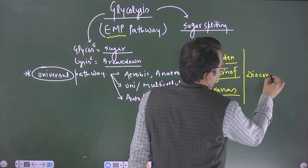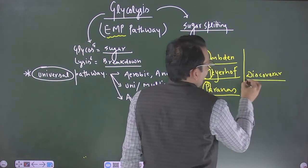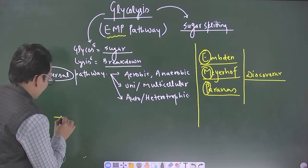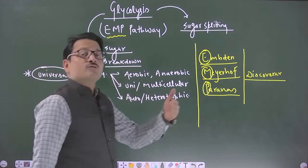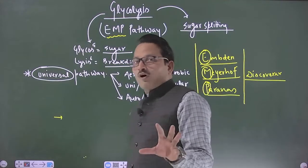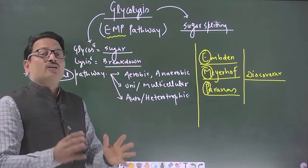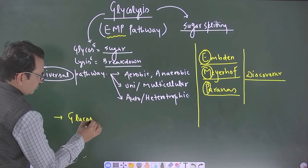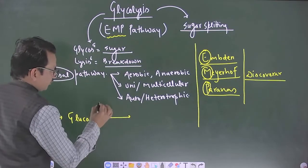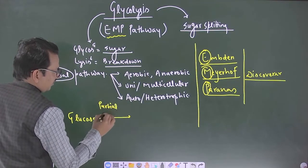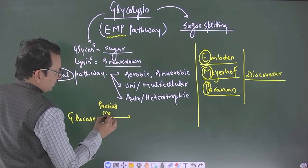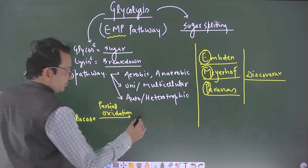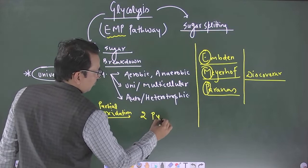They are discoverers of this pathway. This process is in NCERT, it is mentioned like this that glucose is the source of primary food as primary substrate in all the organisms. Glucose undergoes partial oxidation and that partial oxidation leads to formation of two molecules of pyruvic acid.